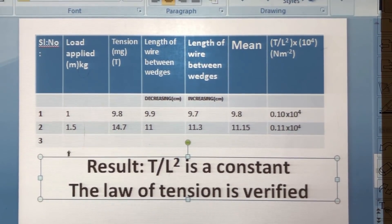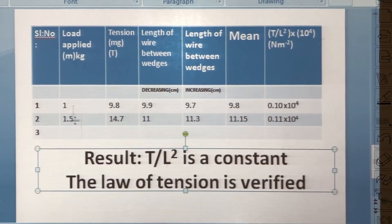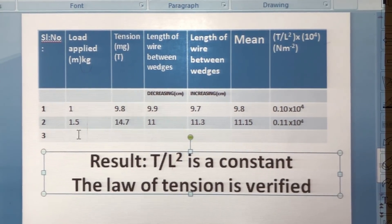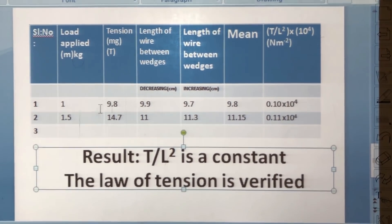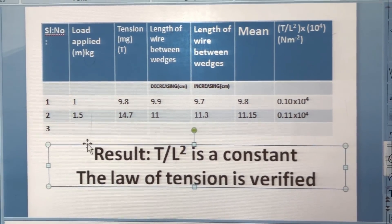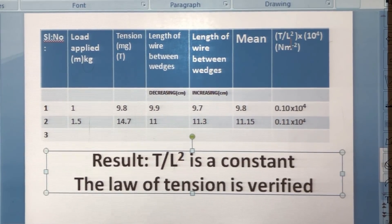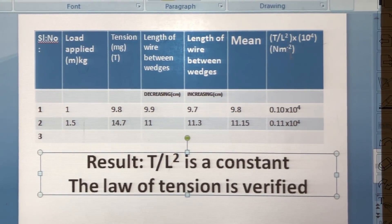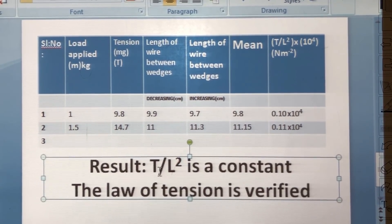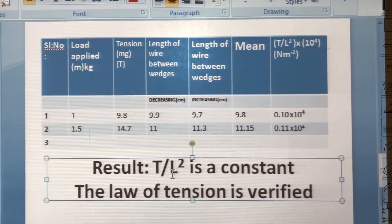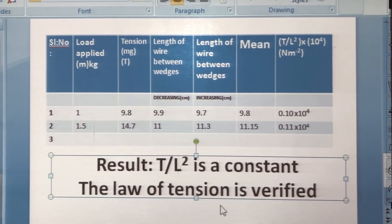Similarly, add slotted weights to the load and take readings for a total of 5 sets. Calculate T/L² for each case and find the mean. You will find that the result T/L² is a constant, and thus the law of tension is verified.